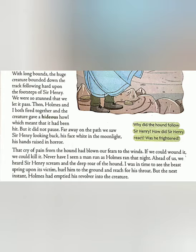They were so stunned that they let it pass. Then Holmes and Watson both fired together, and the creature gave a hideous howl, which meant that it had been hit. What they saw was that the hound could take huge jumps and was following Sir Henry very fast. Lestrade, Sherlock Holmes and John Watson were all so shocked that they could not stop the hound at first, but soon Holmes and Watson fired at the hound and the shot was right on target, and the hound gave a dreadful howl, crying in pain.